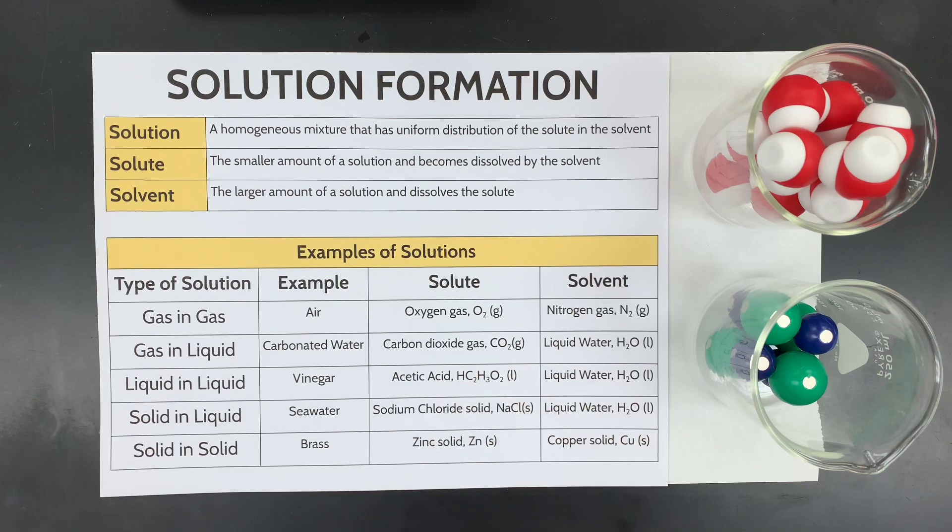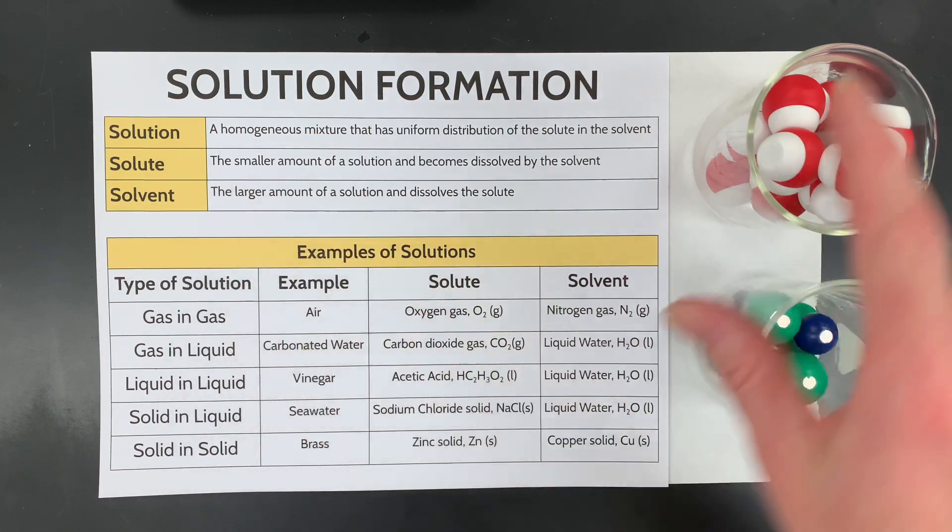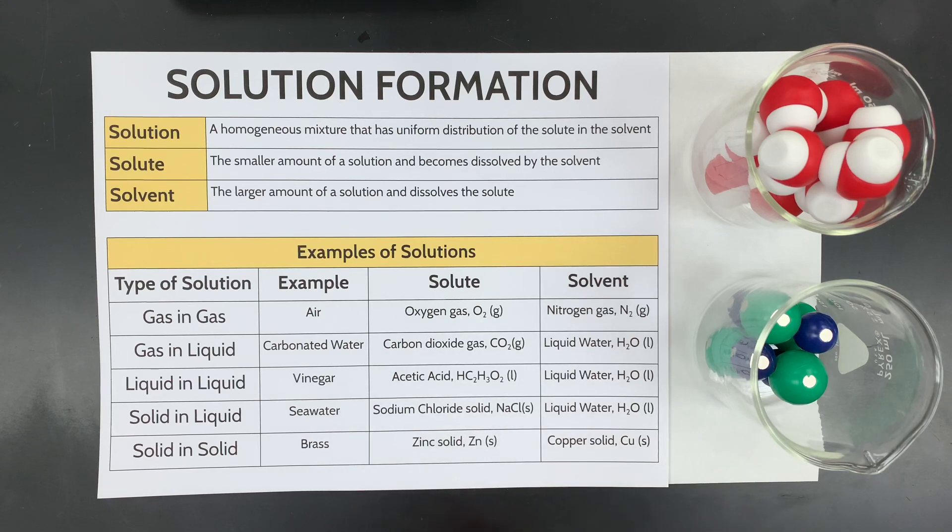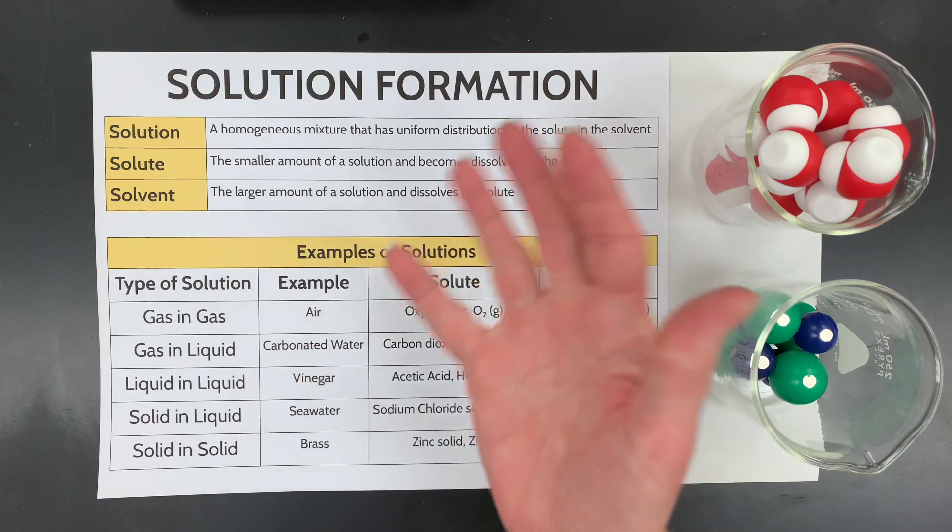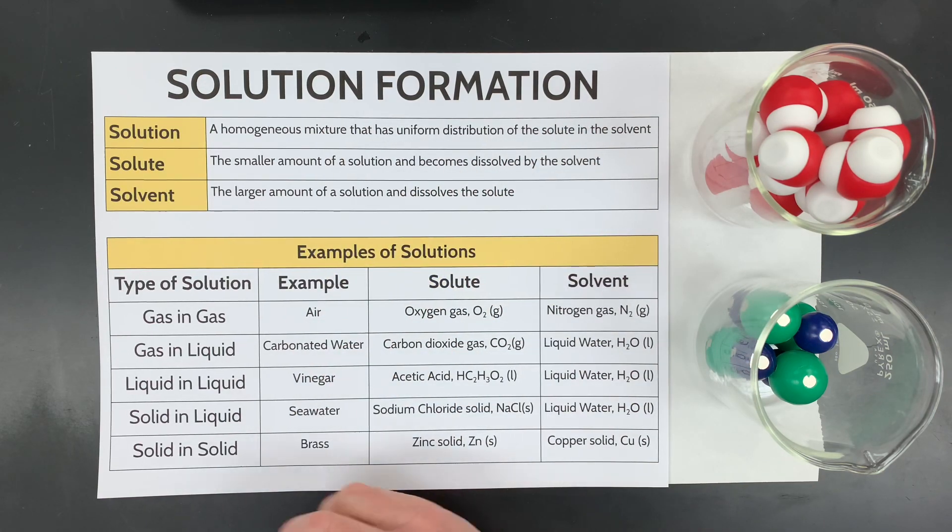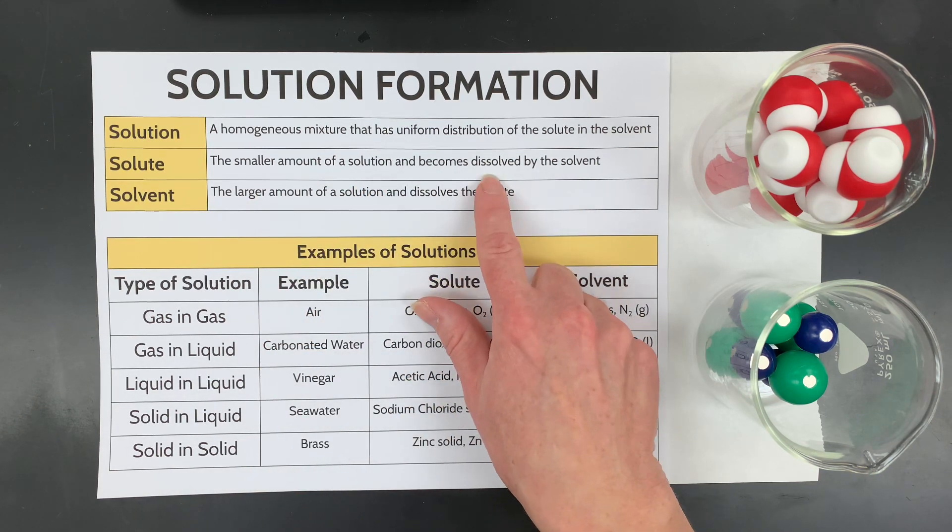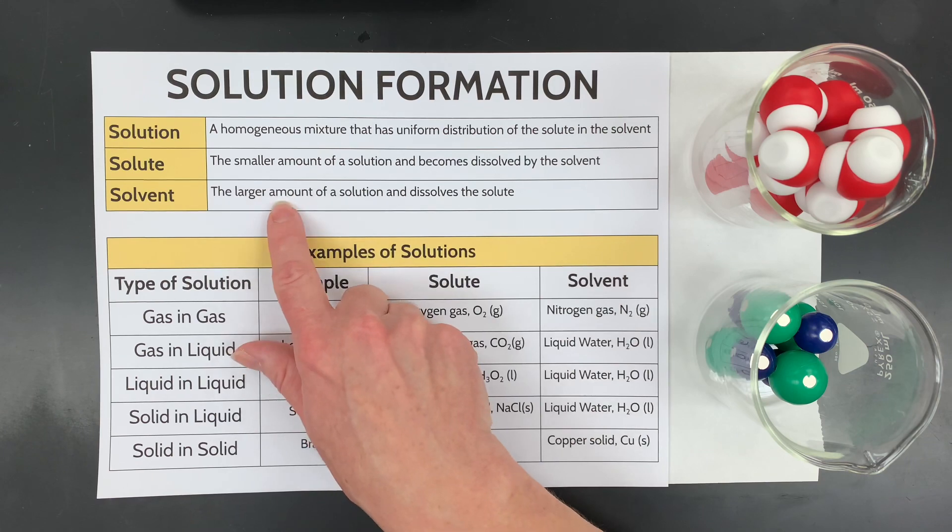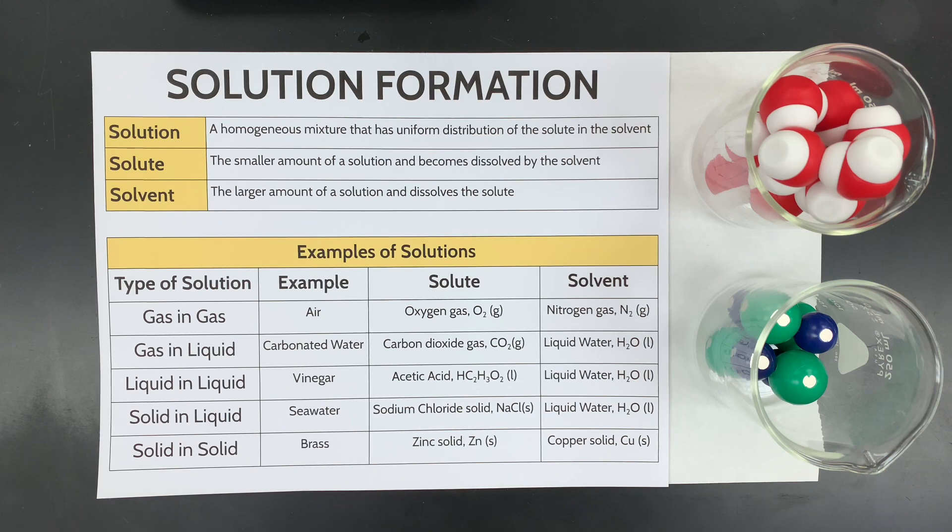So solutions are homogeneous mixtures. That means it has to contain at least two different particles, and they'll be uniformly distributed with the solute and the solvent. The smaller quantity in a solution is the solute, and it's what's being dissolved. And then the larger quantity is the solvent, and it kind of does the dissolving.